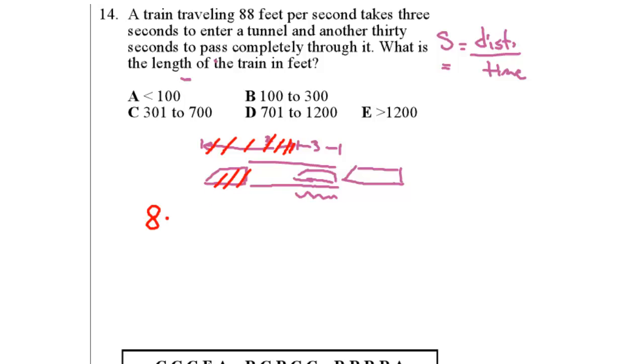So now, what is my speed? 88 feet per second. What is the distance that is the length of the train that I'm looking for? That's the distance it traveled in 3 seconds, the length of it, over the time which is 3 seconds, the time it took to get completely inside the tunnel. So the length equals 88 times 3. 80 times 3 is 240, 8 times 3 is 24. So it's 240 plus 24, that's 264. So the answer would be B.